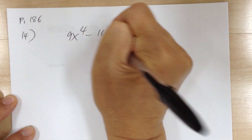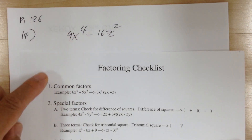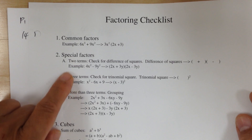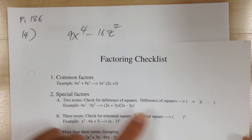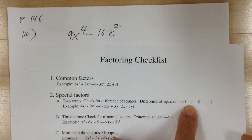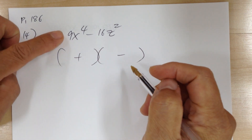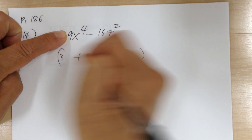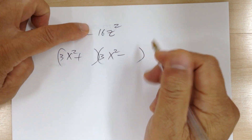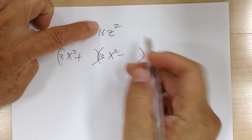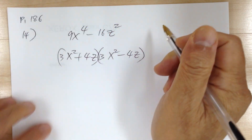Next: 9x⁴ - 16z². Step 1, common factor — nothing. Step 2: two terms, square minus square, so it's a difference of squares — break into conjugates. Get two sets with plus and minus. To get 9, need 3 × 3; x² × x² gives x⁴; plus times minus gives minus; 4 × 4 gives 16; z × z gives z². So 9x⁴ - 16z² = (3x² + 4z)(3x² - 4z).